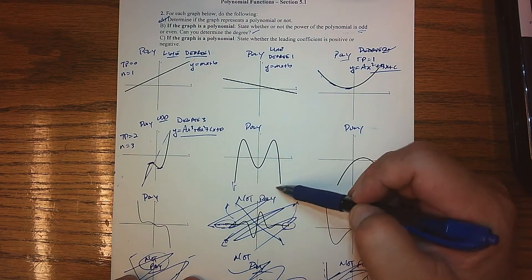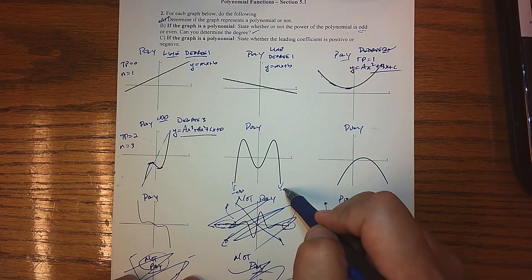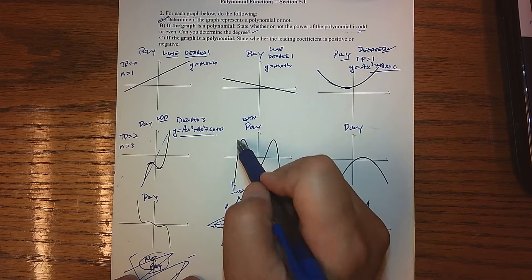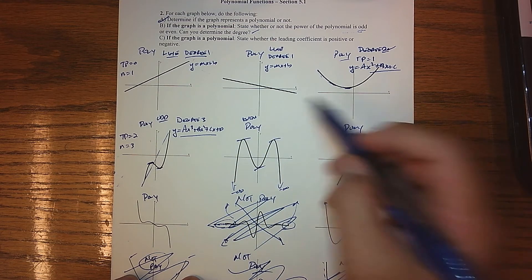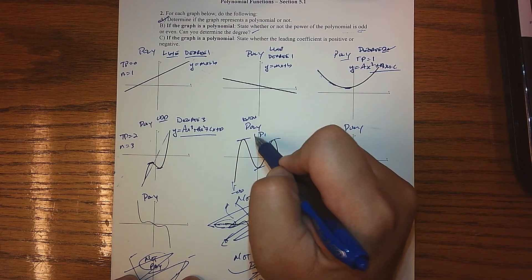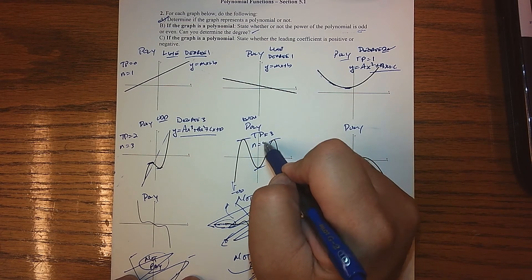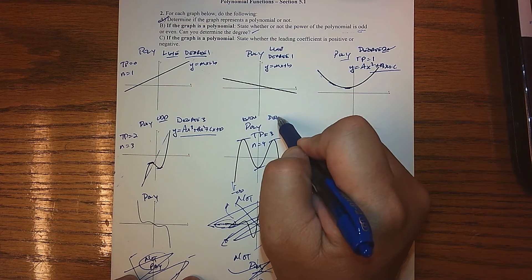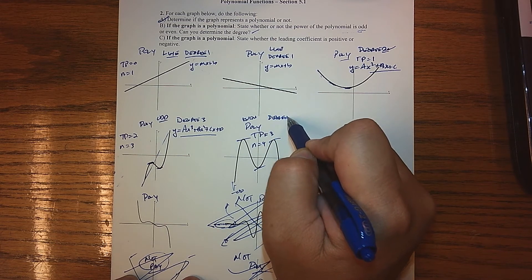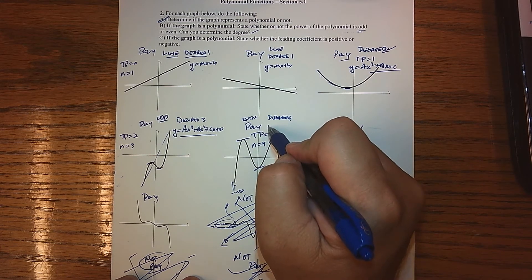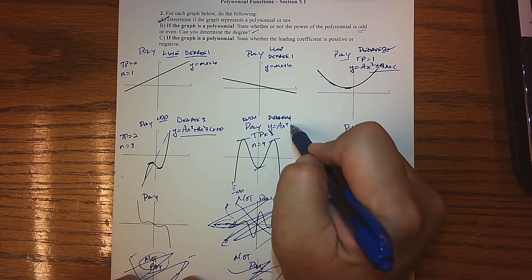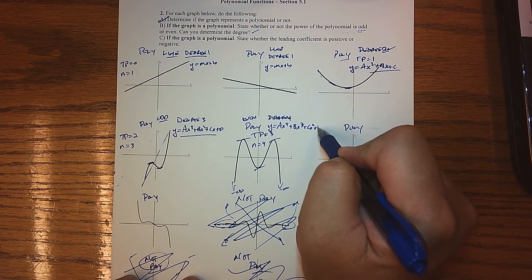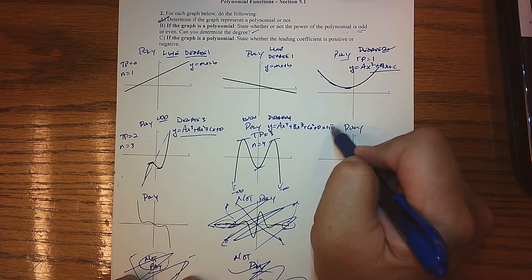On the next one, the end behavior is the same — they're both going to negative infinity. So that alone tells me that we are an even degree polynomial. I see three turning points. So my TP is equal to three, which means my n at most has to be four. So this is a degree four polynomial — y is some ax to the fourth plus bx cubed plus cx squared plus dx plus f.